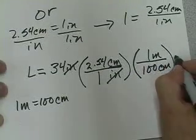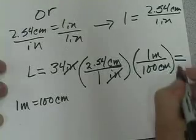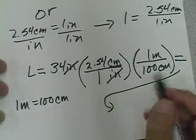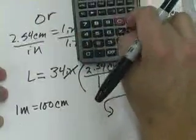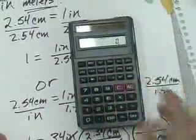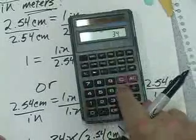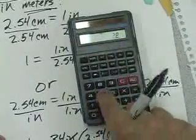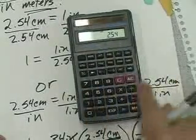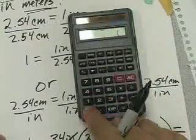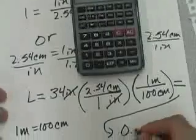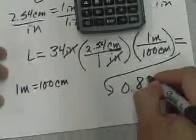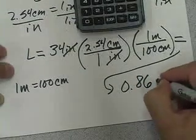Therefore, when we multiply this out, we will come up with 34 times 2.54 divided by 100 equals 0.866 meters.